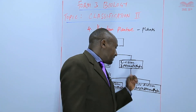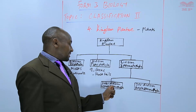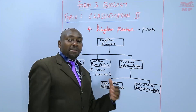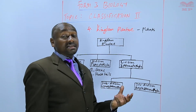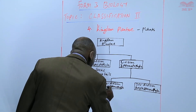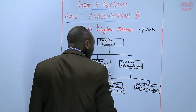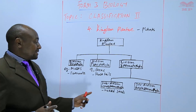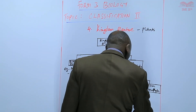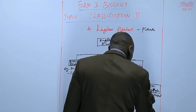In Subdivision Angiospermatophyta — the angiosperms — these are the plants that are more advanced. They are the common flower-bearing plants. Those flowers later form seeds that are enclosed within the fruits. For the gymnosperms, we have naked seeds not enclosed within the fruit; examples include pines and cypress. For the angiosperms, the seeds are enclosed within the fruit.